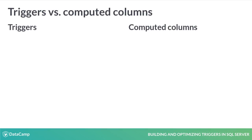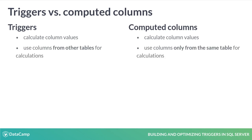The second comparison of triggers is with computed columns. Computed columns are a good way to automate calculation of the values contained by some columns. Computed column values are determined based on values from other columns, but only from the same table. This limitation can be overcome by using triggers, as a trigger can use columns from other tables as well to calculate values.